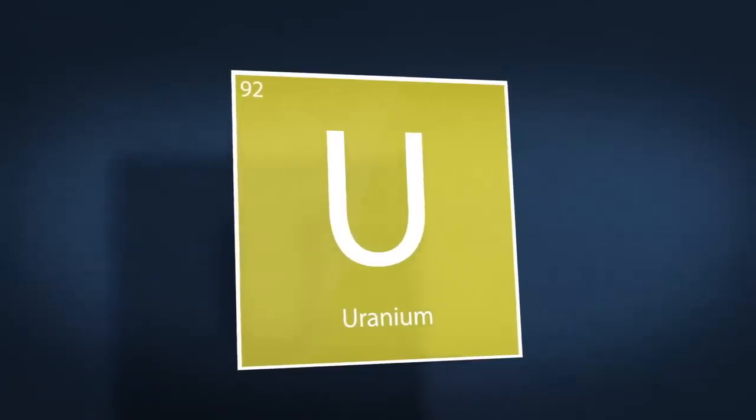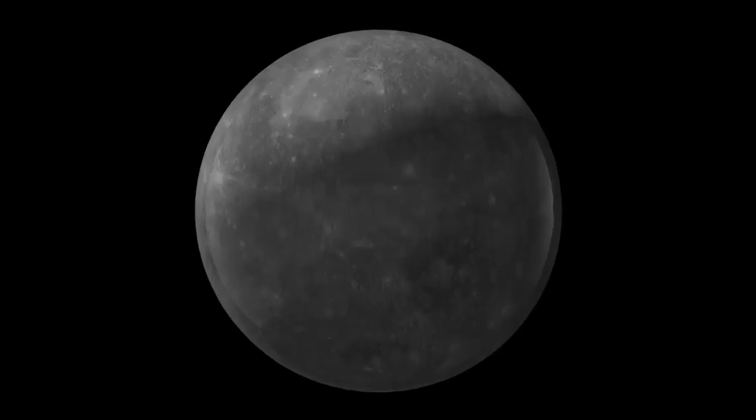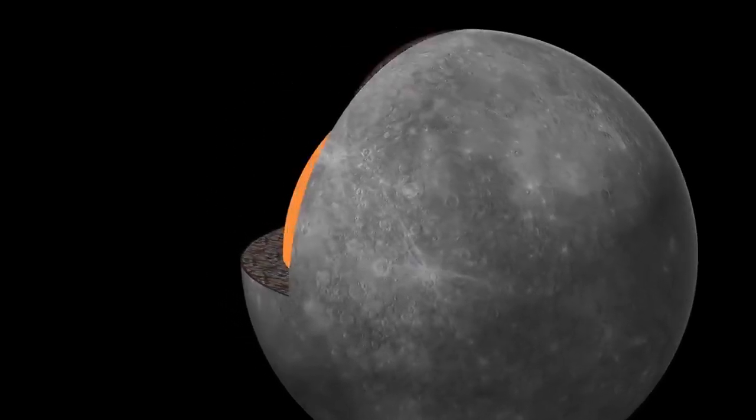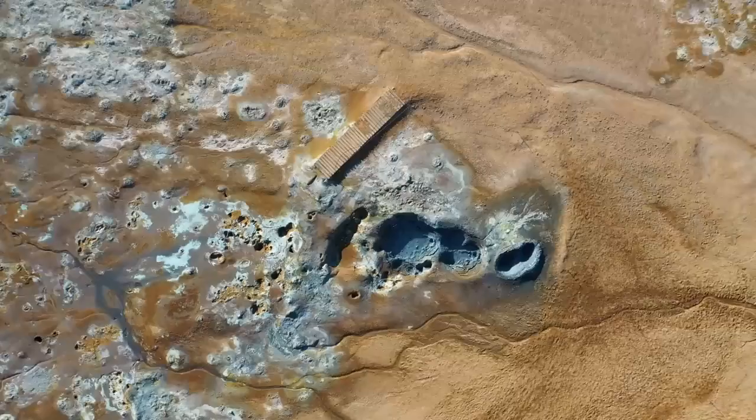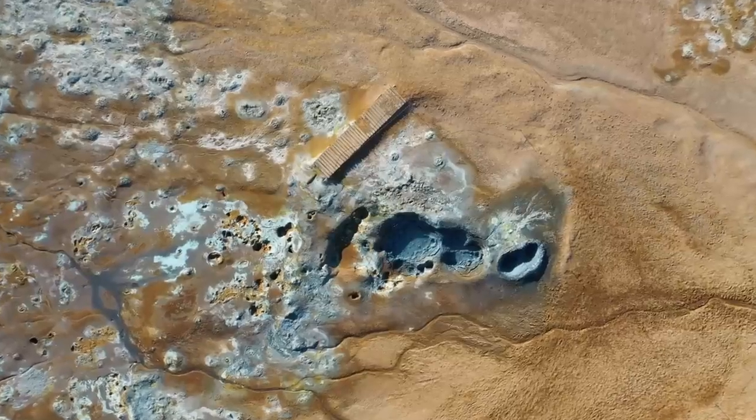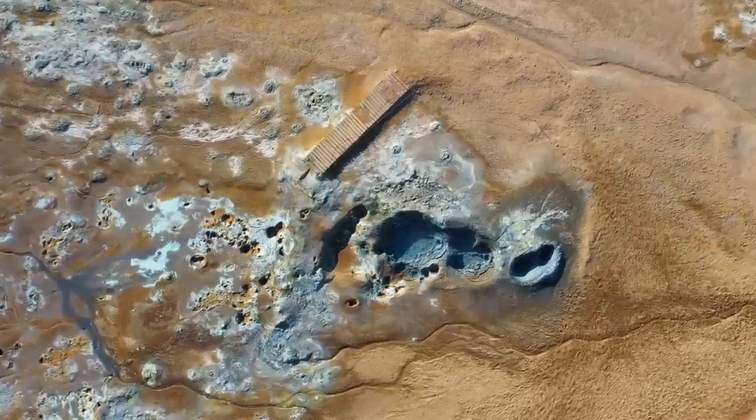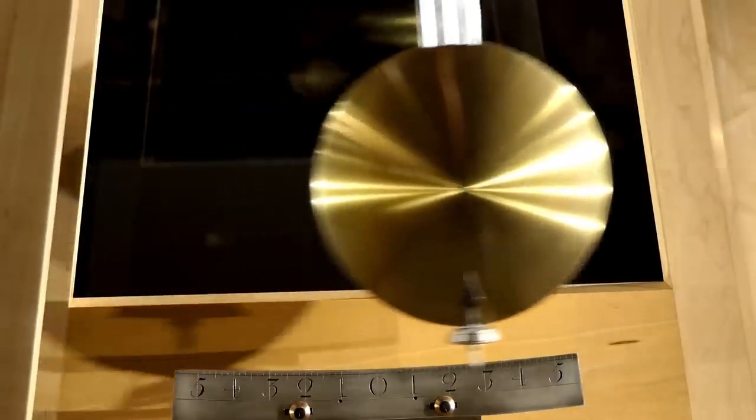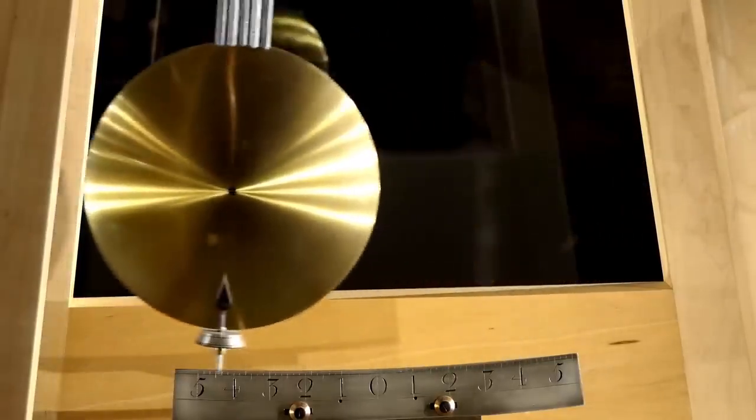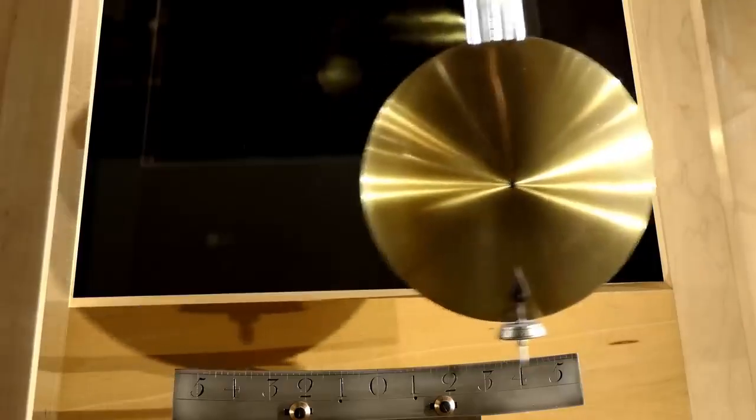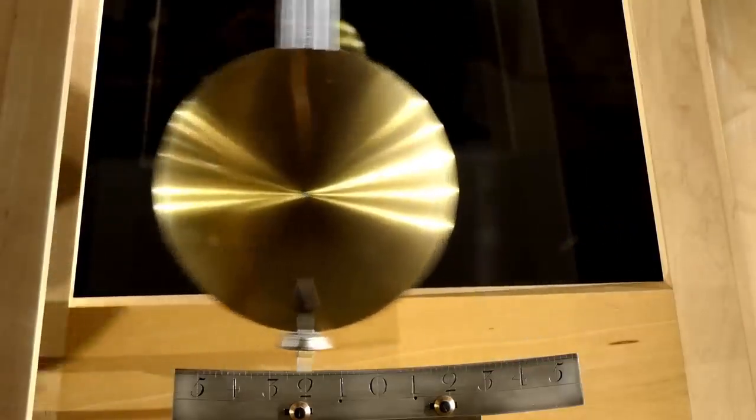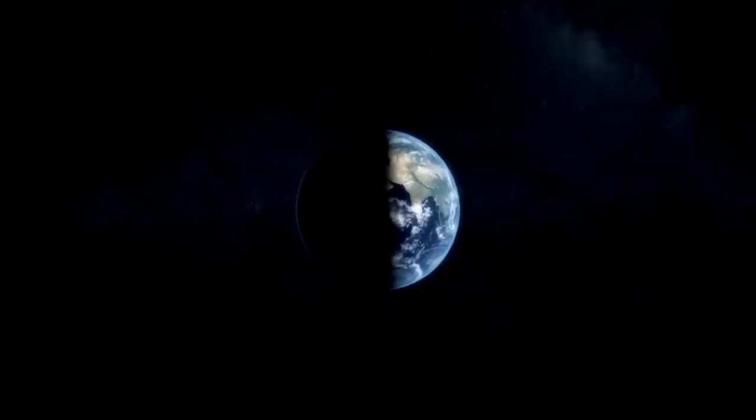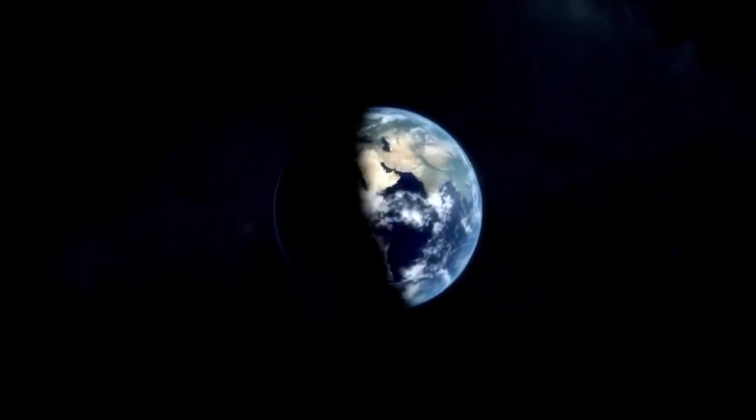Voyager was never meant to travel this far. It was never supposed to leave the solar system, never designed to confront the limits of dimensional stability or the possibility of artificial structures in interstellar space. And yet here it is, still transmitting, still revealing, still challenging the foundations of modern science. It carries with it the golden record, a message from Earth to any intelligent beings it might encounter. But now, irony turns full circle. Voyager may be the first to receive a message in return.